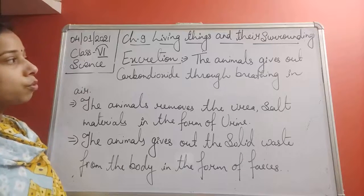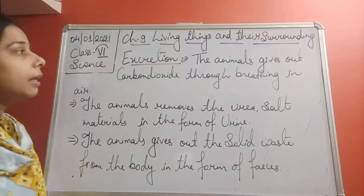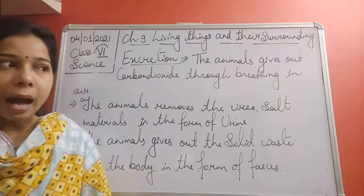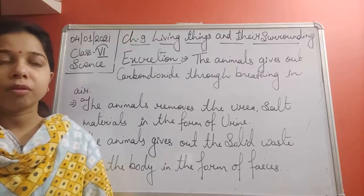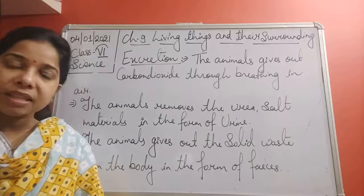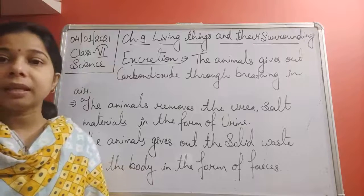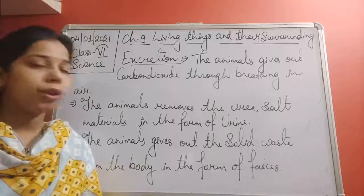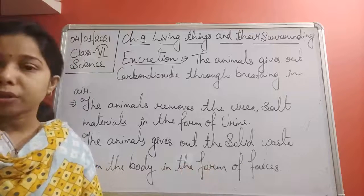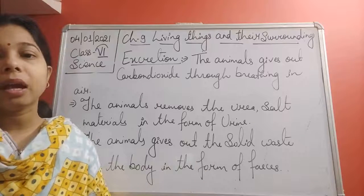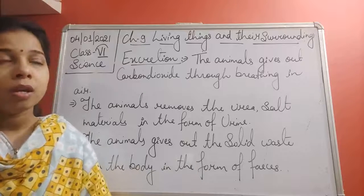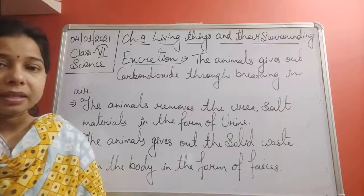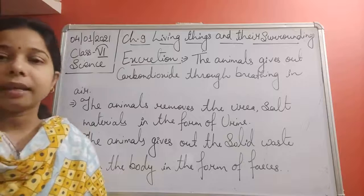Such excretion occurs in animals. Now if we talk about what happens in plants, plants also perform excretion but in a different way. They do not discharge urine or remove solid waste like humans and other animals do. We should first know what the waste materials are in plants.